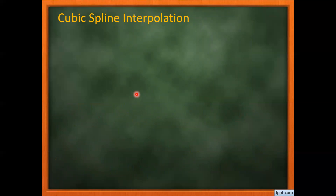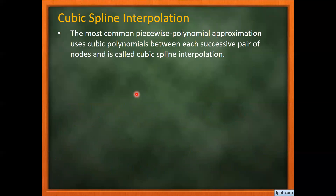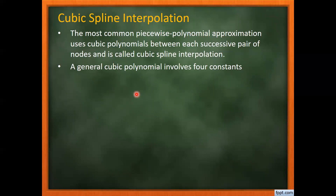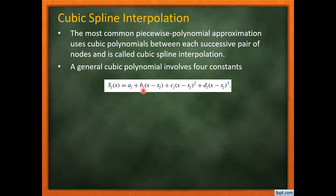The next topic is cubic spline interpolation. We can define any order polynomial for a piecewise function, but here we discuss cubic splines. A cubic spline polynomial is a piecewise polynomial of degree three on each subinterval. A cubic polynomial involves four constants a, b, c, and d. The spline polynomial is defined as Sj(x) = aj + bj(x − xj) + cj(x − xj)² + dj(x − xj)³.